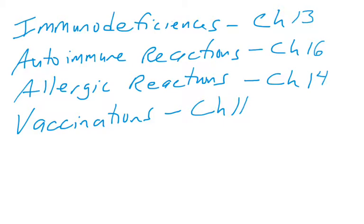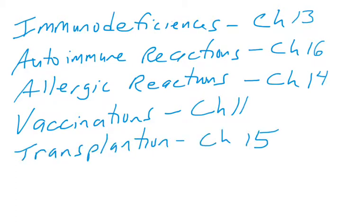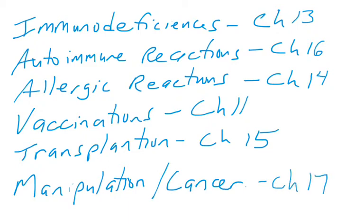We'll also cover manipulation of the immune system. Vaccinations are in Chapter 11 — we'll talk about how vaccines work. Transplantation is another manipulation: in order to put somebody's organ inside another person, we have to convince the immune system not to attack that organ since it is non-self. We'll talk about tissue rejection and transplantation in Chapter 15. Lastly, we'll talk about manipulation of the immune system in treating cancer — immunotherapies where scientists manipulate the immune system to go after cancer cells — covered in Chapter 17.